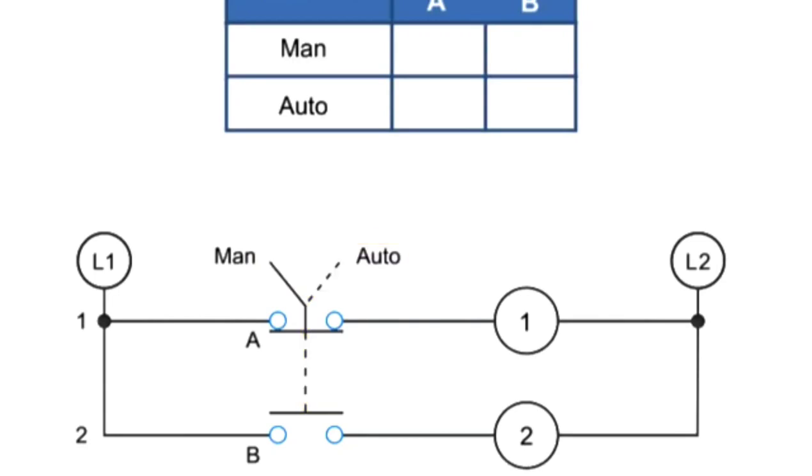The truth table can be used to easily interpret what contacts are closed for a particular position. An X is placed in the table if a contact is closed in any position. An O is used to depict that a contact is open.